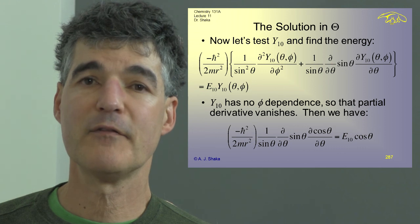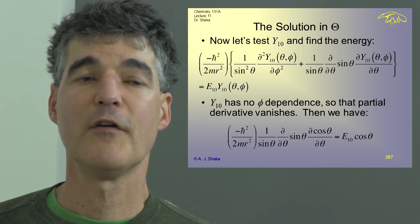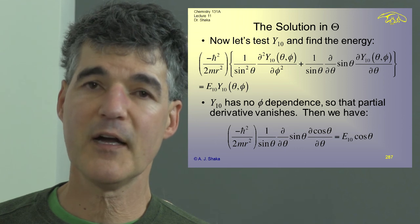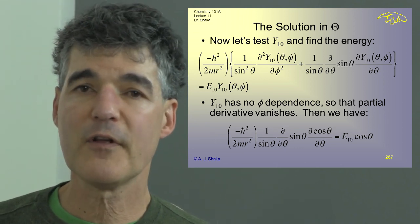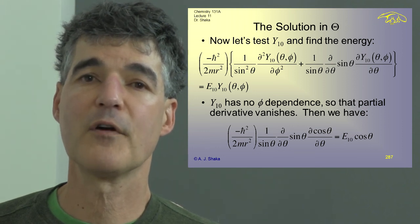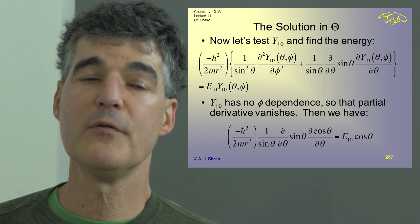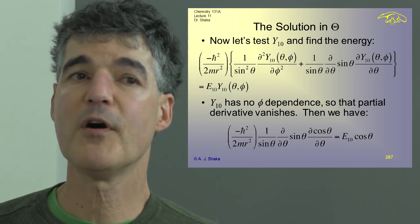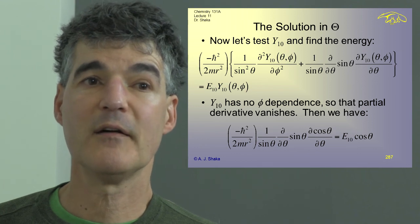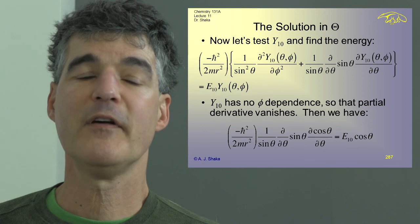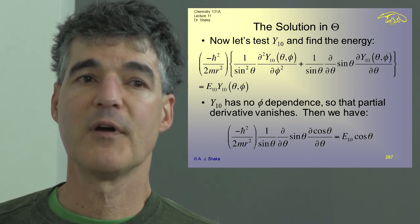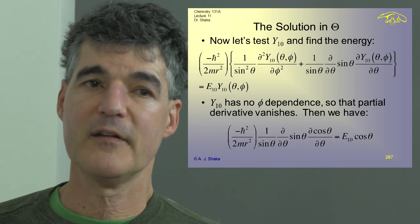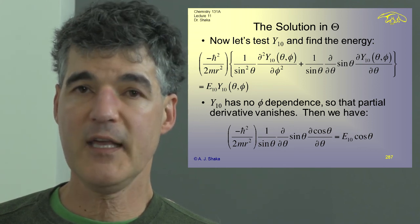If we put that in — which is going to be called Y(1,0) when we finally figure out the proper notation — we set up our eigenvalue equation. Since there's no phi dependence at all, that partial derivative vanishes and we can throw that part out. We have minus h-bar squared over 2mr squared, 1 over sine theta, d/dθ of sine theta times d(cosine theta)/dθ, and that should equal E(1,0) times cosine theta.